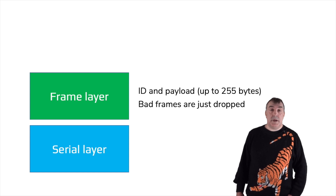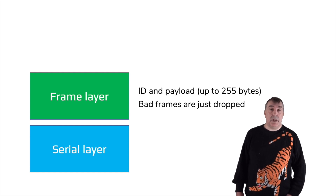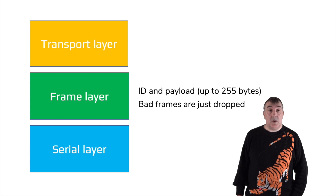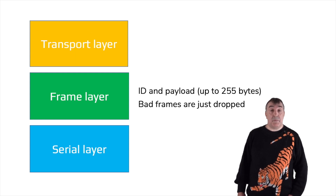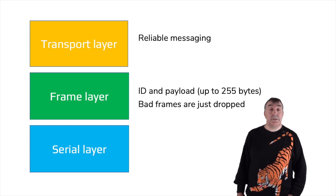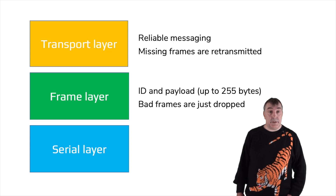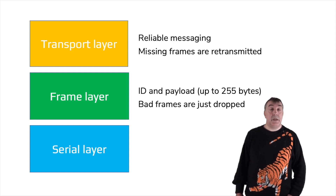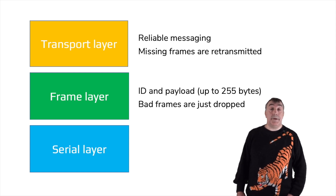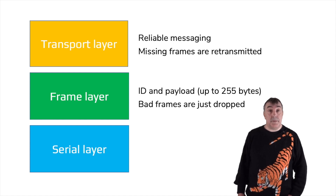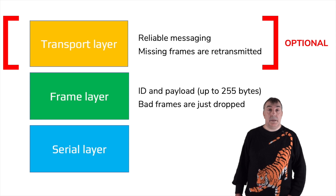Discarding bad frames is not a problem in most applications using sensor data, because new values will be along shortly giving the current sensor value. But for systems passing events or commands, it's much more important that everything is delivered. So there is a transport layer on top of the frame layer that provides reliable messaging — it acknowledges each frame and retransmits missing ones. Because it uses extra RAM, more CPU time, and more code, this whole transport layer is optional.